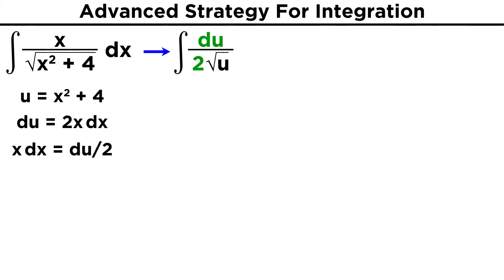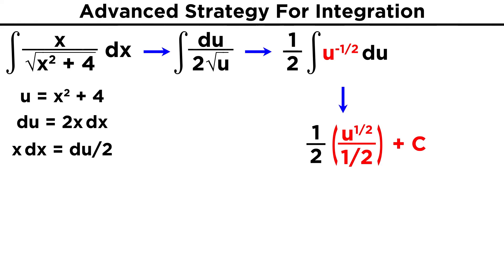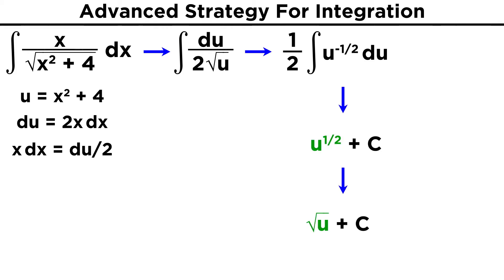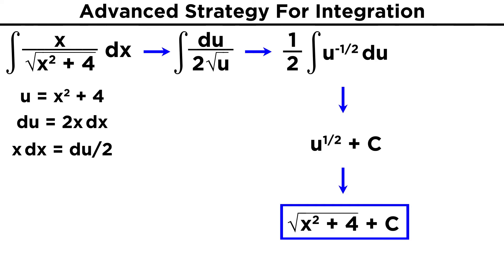We can just rearrange slightly to make x dx equal to du over two. Plug that in, and we are left with du over two root u. If we modify slightly, we can pull one half out of the integral, change the root u in the denominator into u to the negative one half, and now things look nice and easy. u to the negative one half becomes u to the one half over one half, or two u to the one half plus c. The twos cancel, u to the one half is simply root u, and we change u back to the other form. This leaves us with a nice and tidy answer: root x squared plus four plus c.